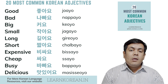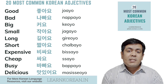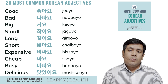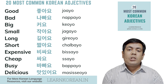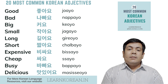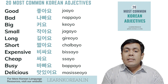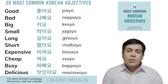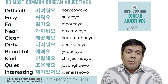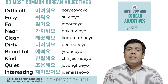The next one is 'to be expensive' — something is expensive: pissayo. And then 'to be inexpensive or cheap'. Number ten is 'to be delicious', to be tasty: mashisayo.